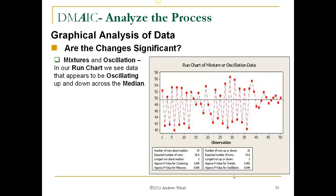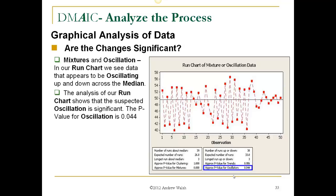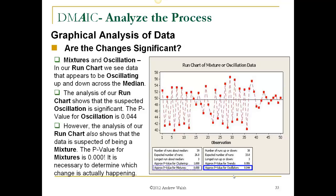Mixtures and oscillations. In our run chart, we see data that appears to be oscillating up and down across the median. The analysis of a run chart shows the suspected oscillation is significant. The p-value for oscillation is .044. It's less than .05. However, the analysis of a run chart also shows that the data is suspected of being a mixture. The p-value for mixtures is .000. It is necessary to determine which change is actually happening.